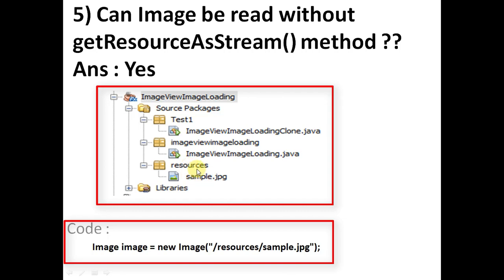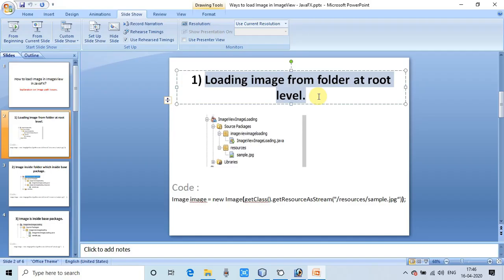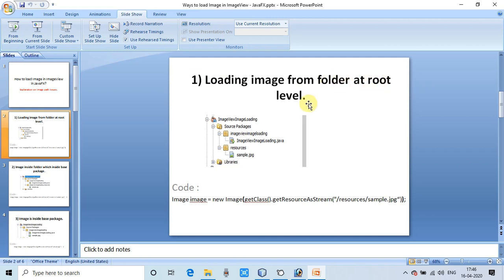In the fifth situation — since we are using getResourceAsStream — you might wonder: can we read images without this method? Yes, we can, but in that case we have to provide the full path of the image. I will show you inside the example. You can see the image is inside a root-level folder and we are going to load it without getResourceAsStream. In that case we use the Image constructor and pass the full path directly.